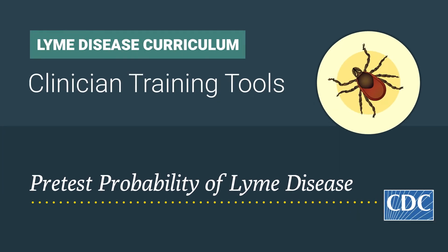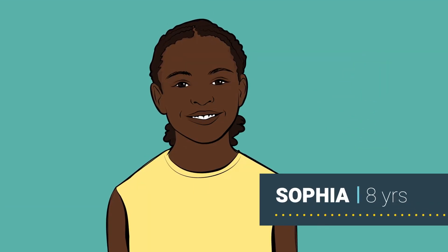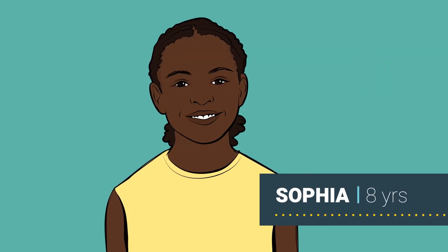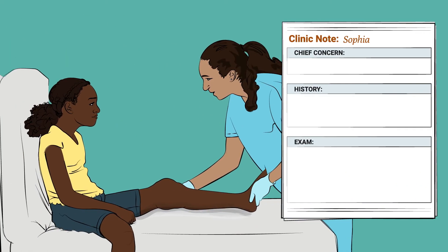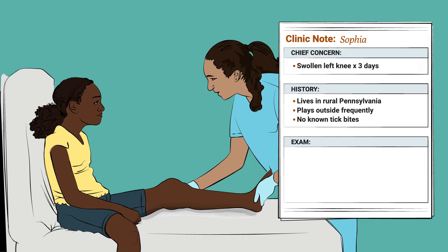Pre-test probability of Lyme disease. Eight-year-old Sophia presents with a left knee that has been swollen and mildly painful for three days. Sophia is usually in good health and has not had prior joint pain. She lives in Pennsylvania and enjoys playing outside. She does not recall any tick bites, and her mother does not remember seeing any ticks on Sophia. Her vital signs are normal, and she has no rash.